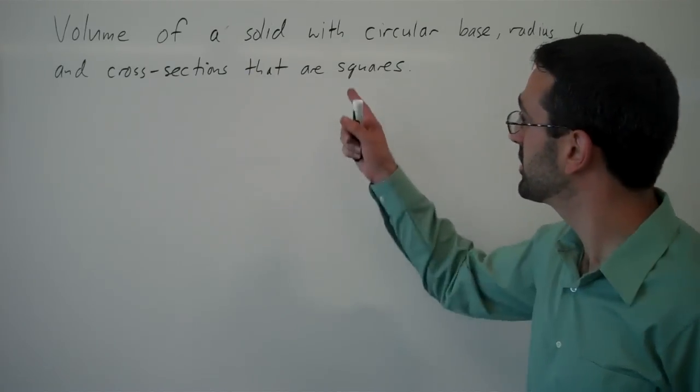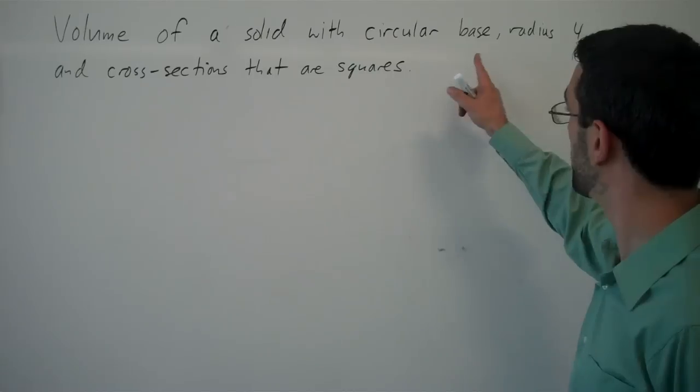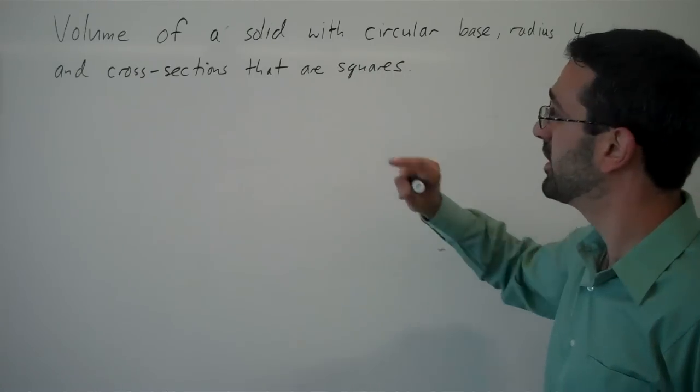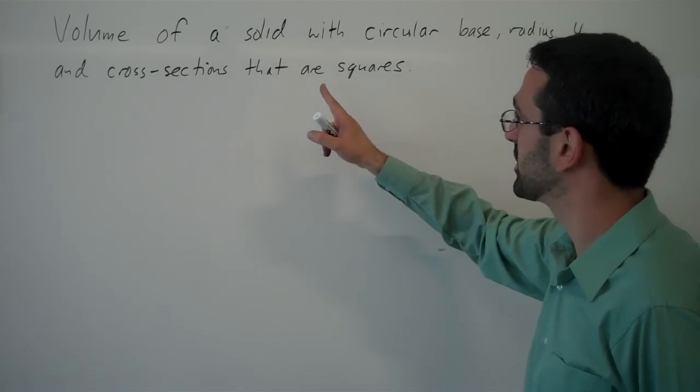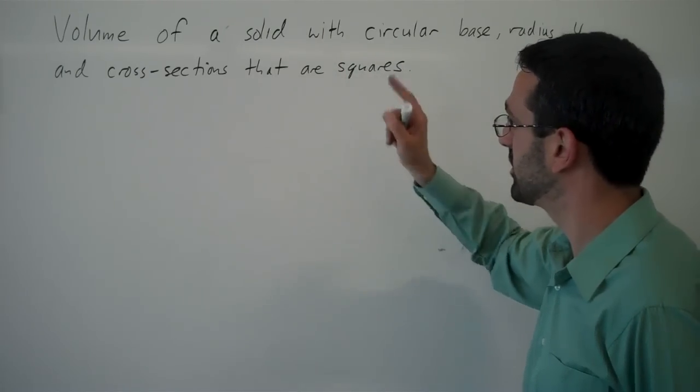So we want to find the volume of a solid with a circular base, radius 4, and whose cross-sections are squares.